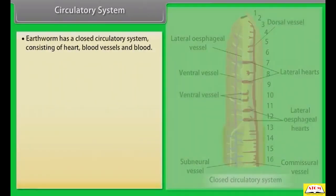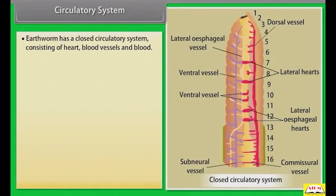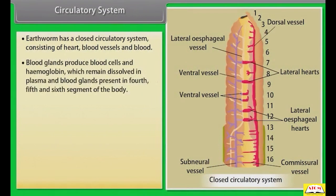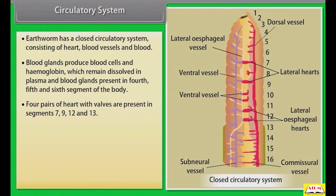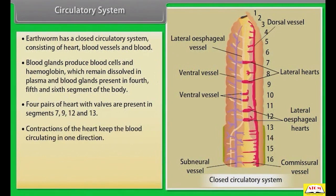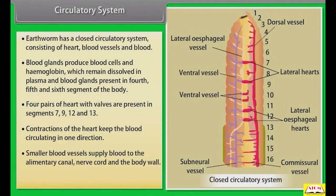Earthworm has a closed circulatory system consisting of heart, blood vessels, and blood. Blood glands produce blood cells and haemoglobin, which remain dissolved in plasma. Blood glands are present in the 4th, 5th, and 6th segments. Four pairs of hearts with valves are present in segments 7, 9, 12, and 13. Contractions of the heart keep blood circulating in one direction. Smaller blood vessels supply blood to the alimentary canal, nerve cord, and body wall.